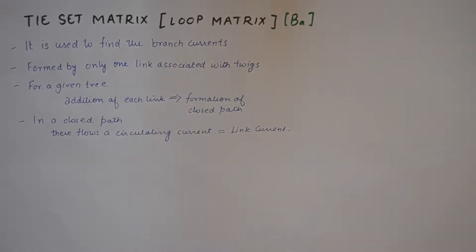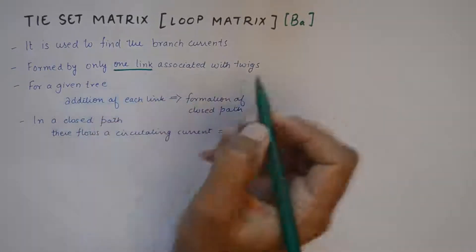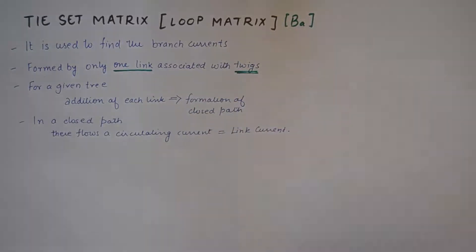Hello friends, welcome to another tutorial in network analysis and synthesis. We are discussing graph theory and we are up to a point where we can now discuss the tie set matrix, also known as the loop matrix. This is one of the techniques where we'll start building our knowledge of analyzing the network using KCLs and KVLs. The tie set matrix is used to find branch currents, which is the objective of analyzing the network, and it is formed by only one link associated with twigs.